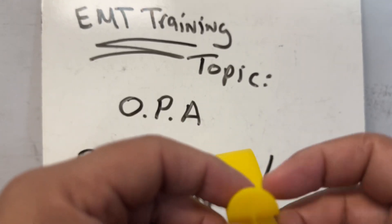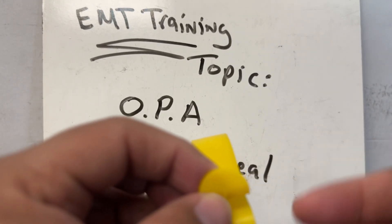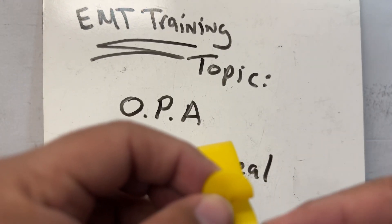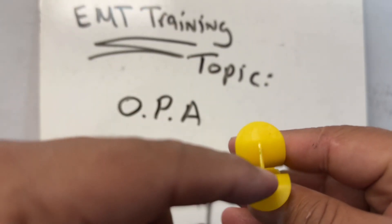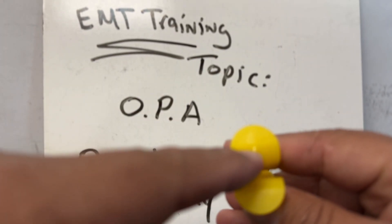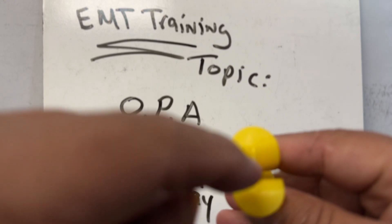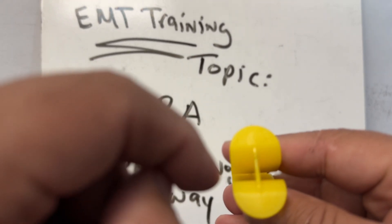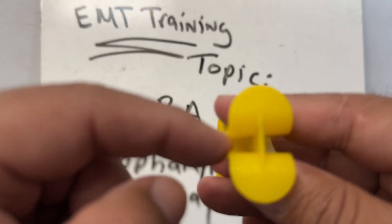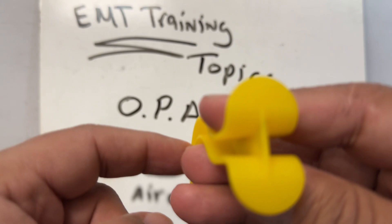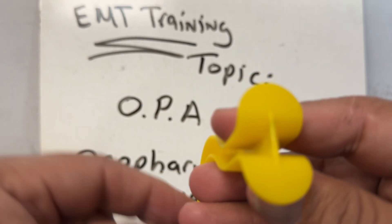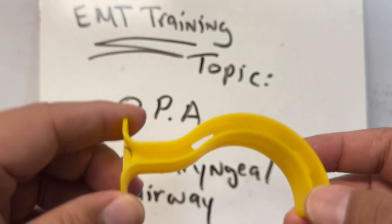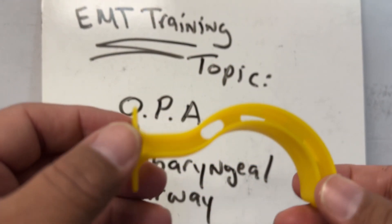There are little grooves here on the device that allow suctioning if needed. Suction is possible through the opening on the side. Some OPAs have a closed circular center where you give ventilation, while others have an opening on the sides for suctioning.